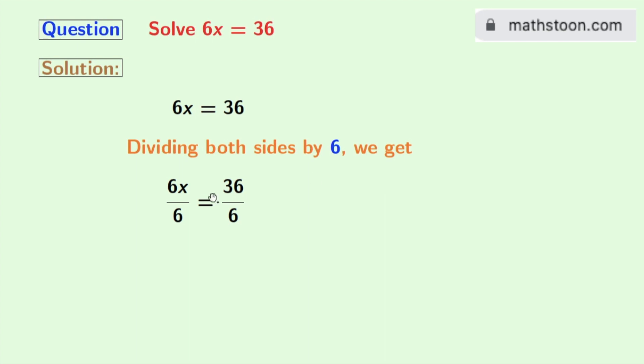By doing so, we get 6x divided by 6 is equal to 36 divided by 6. In the left hand side, the 6 cancels out, so we are left with x.